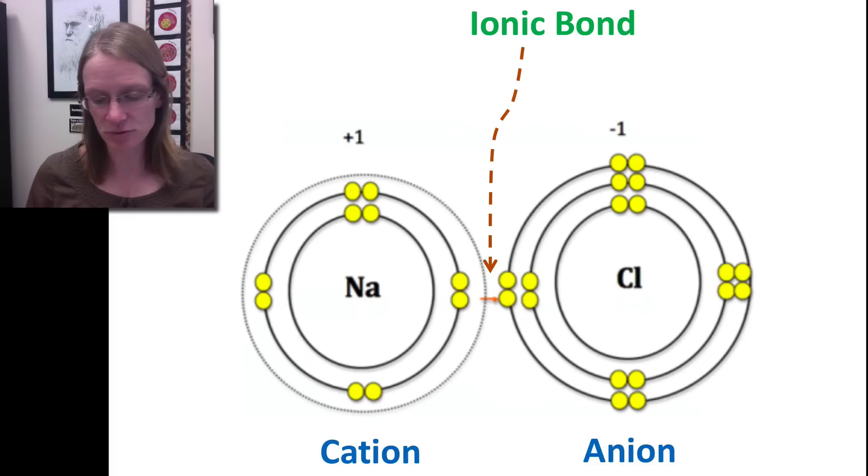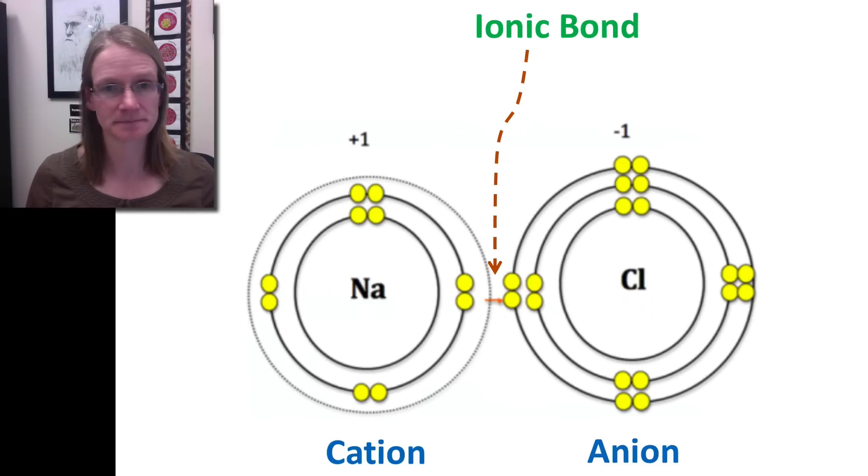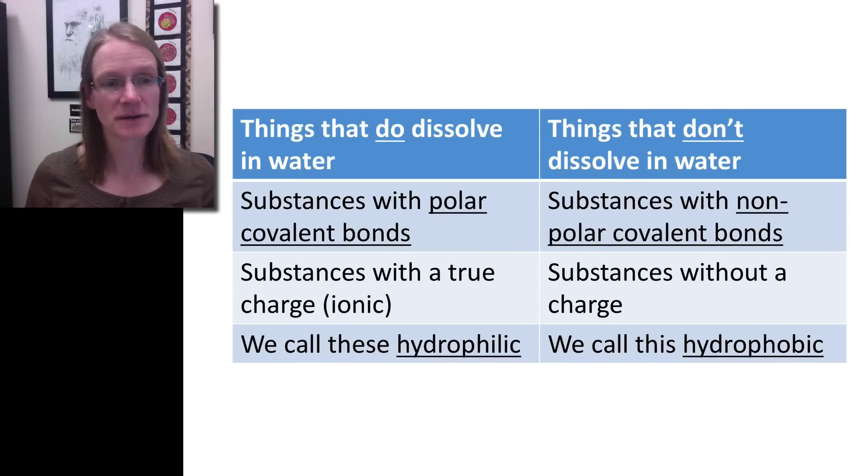So we can then kind of recap and think a little bit about what allows things to dissolve in water and in what cases they maybe wouldn't dissolve in water. So we have this table here that tells us a little bit of what we've learned so far. So the things that do dissolve in water are things that have polar covalent bonds or perhaps they have ionic bonds. And we call these things hydrophilic.